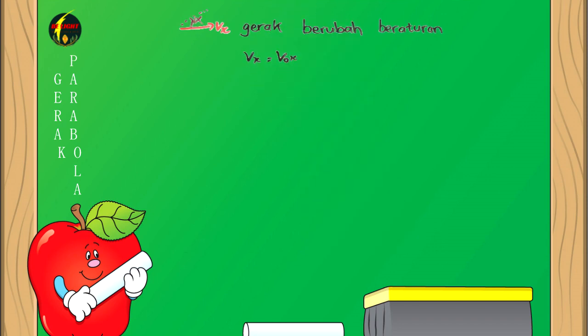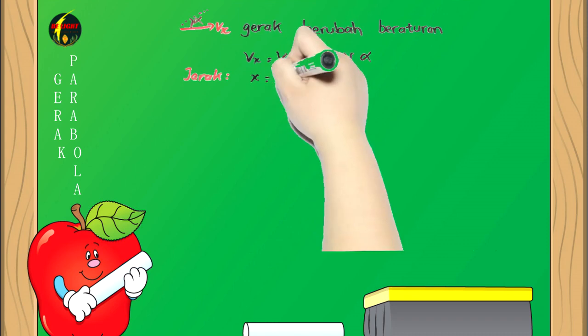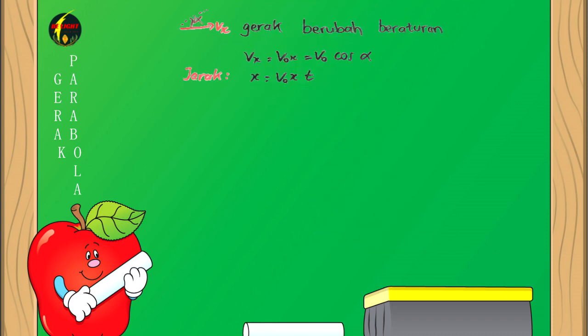Sehingga VX = V0X = V0 cos α. Jarak yang ditempuh memenuhi X = V0X × T = V0 cos α × T.